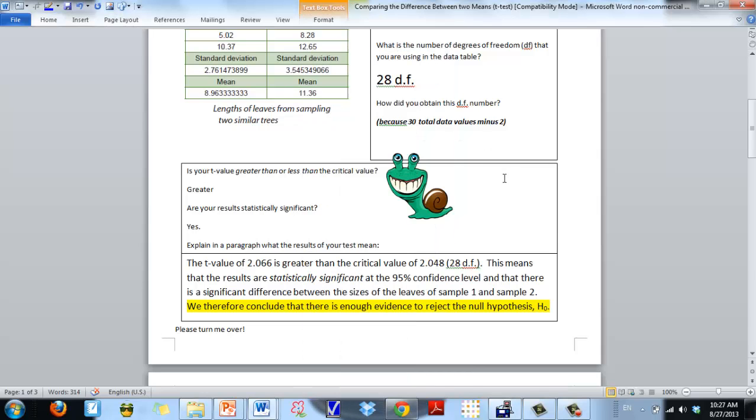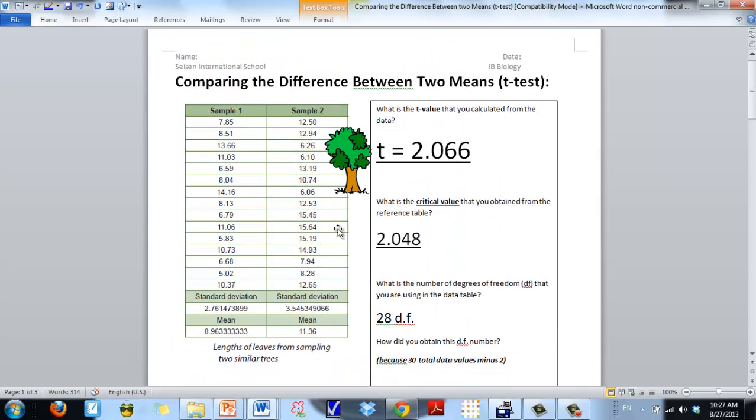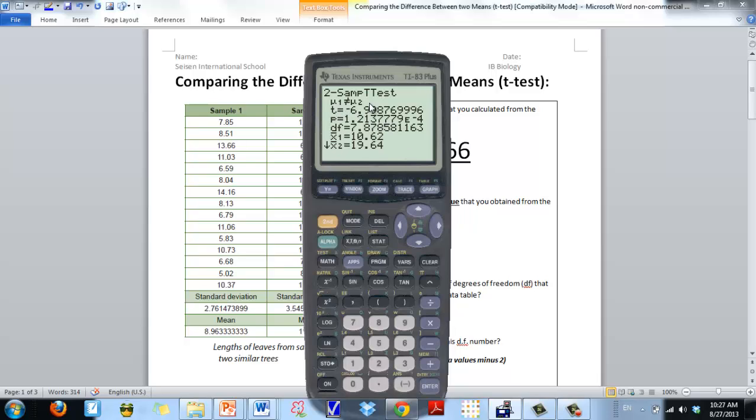Now this doesn't match up with the example that I'm using up here because the numbers are actually different, so don't worry. But in this case, whatever the data I put in, it's giving me a value of 6.99 which I round up to 7.00. Notice that it's negative. You can ignore that. What it's actually referring to is if it's negative, it means the average for the numbers in group 2 is larger. But for all intents and purposes, you can just take the absolute value. So you would write down t is equal to 7.00.